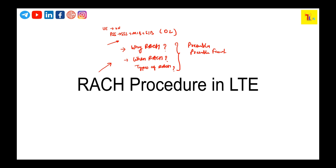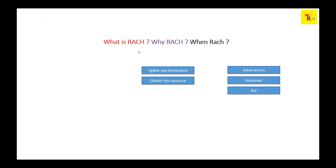The first thing is: why is RACH required? There are two most important reasons. The first is to achieve uplink synchronization between the UE and the eNodeB — the UE must be synchronized in the uplink direction. The second reason is to obtain the resources needed for the RRC connection request, which is message 3. These are the two most important reasons why we are going to have the RACH procedure.